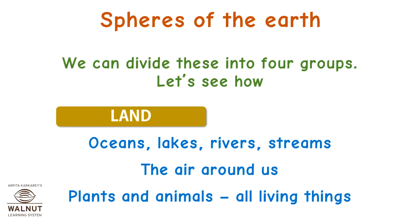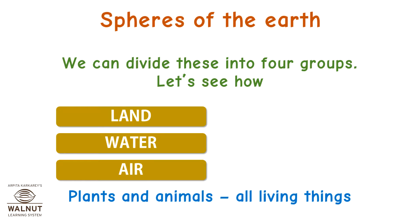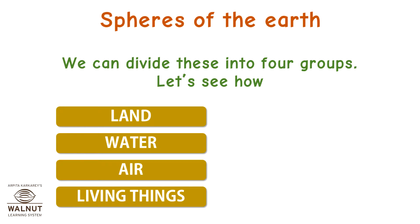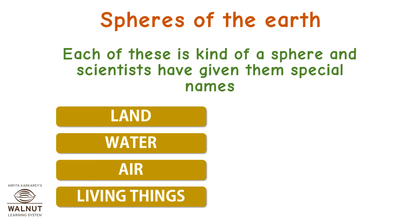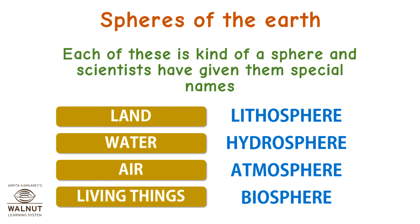Land, water, air, living things. Each of these is kind of a sphere and scientists have given them special names. Land is lithosphere. Water is hydrosphere. Air is atmosphere. Living things is the biosphere.